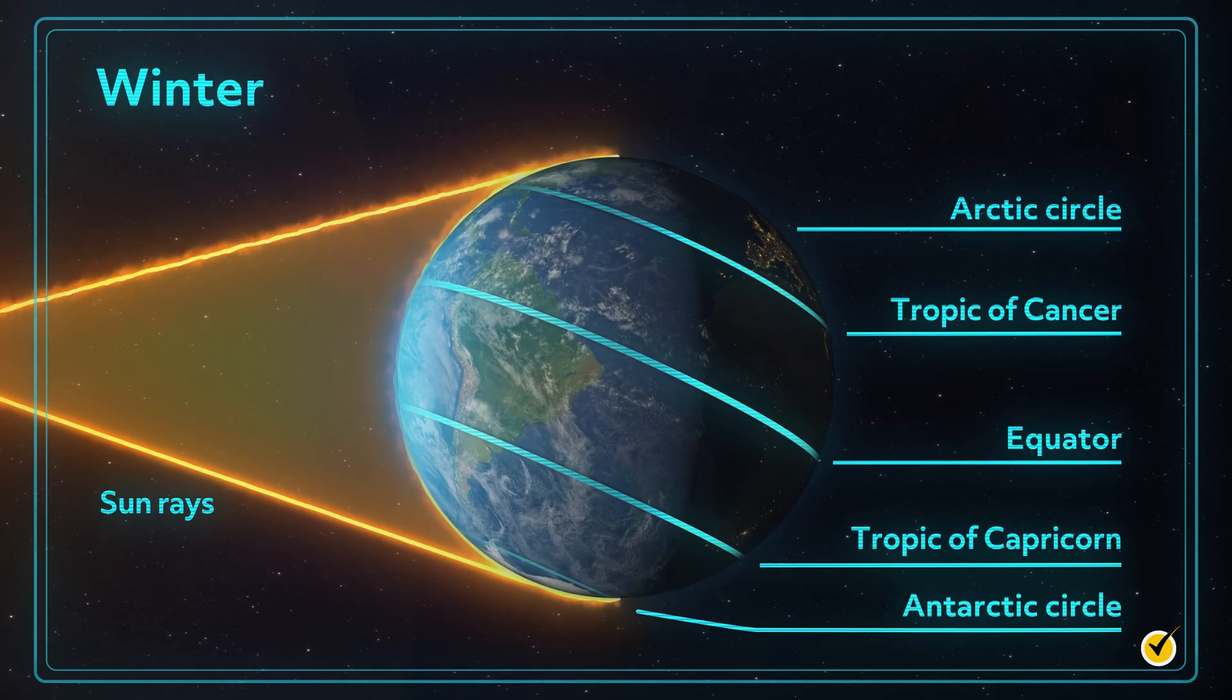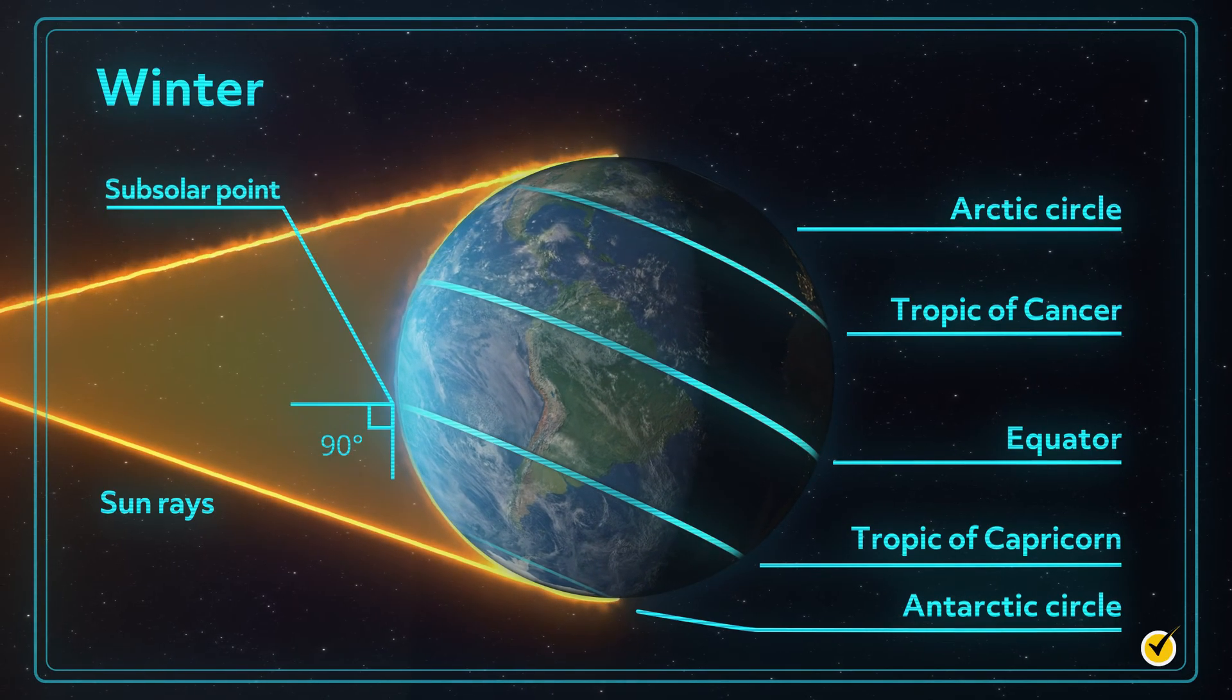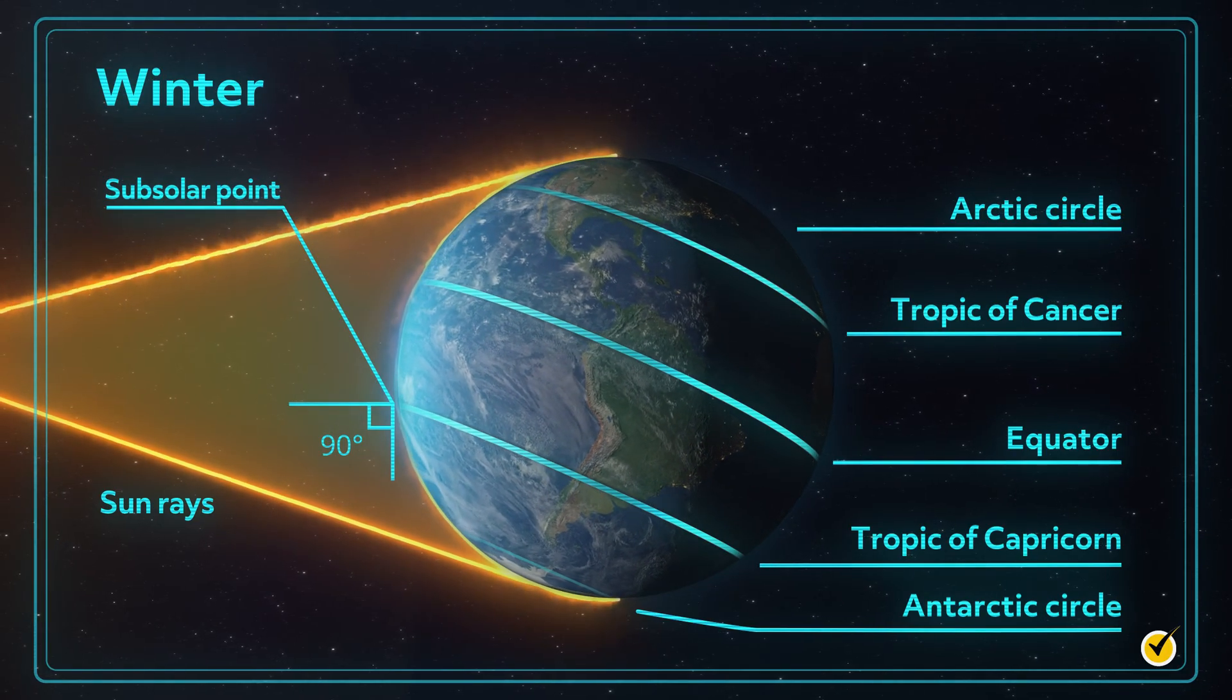Where are the Sun's rays hitting at a perpendicular angle? This time, it's the Tropic of Capricorn, located at 23.5 degrees south.